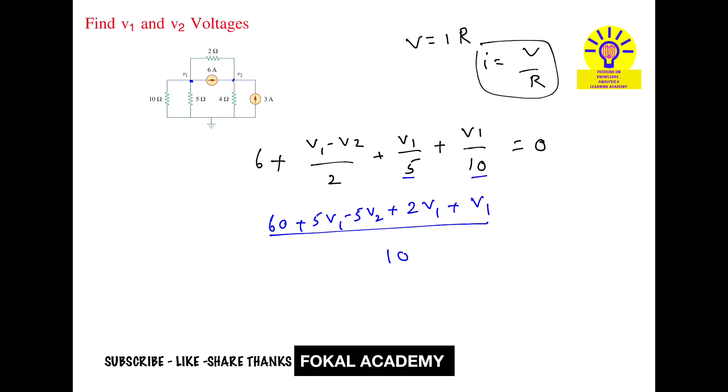Bringing 60 to the right side: 60 equals minus 5v1 plus 5v2 minus 2v1 minus v1. Combining terms: minus 5v1 minus 3v1 is minus 8v1, so 60 equals minus 8v1 plus 5v2.